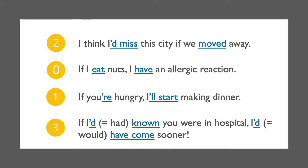"I think I'd miss the city if we moved away" is an example of the second conditional — it talks about an unlikely future event. The next one is the zero conditional: "If I eat nuts, I have an allergic reaction" — a general truth. The third one is the first conditional: "If you're hungry, I'll start making dinner" — a real future possibility. And finally, "If I'd known you were in hospital, I'd have come sooner" — here I'd stands for 'I had' and 'I would' — this is an example of the third conditional, an impossible past event.